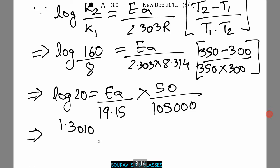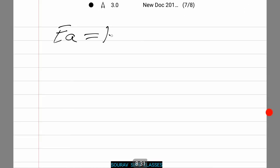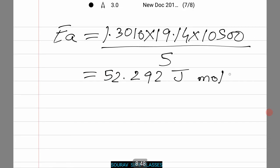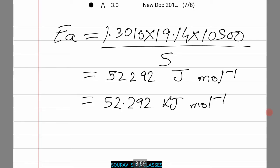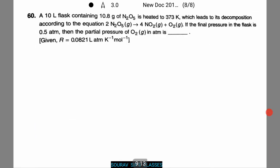That is, 1.3010 equals Ea divided by (19.15 × 10500). Upon calculation, Ea equals 1.3010 × 19.14 × 10500 / 5, which equals 52,292 joules per mol, or 52.30 kilojoules per mol. Let's quickly do another gaseous state question: a 10-liter flask containing 10.8 grams of N2O5 is heated to 373 Kelvin.